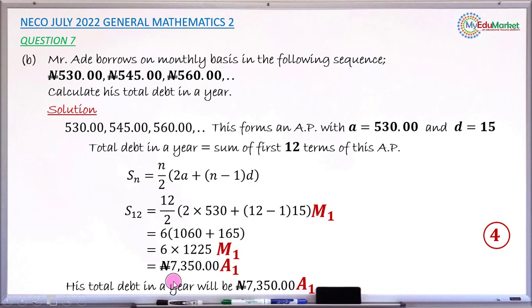And when you now write the answer in statement form, that is the total debt 7,350 Naira, you have another accuracy 1 mark. So in total, this question has 4 good marks.